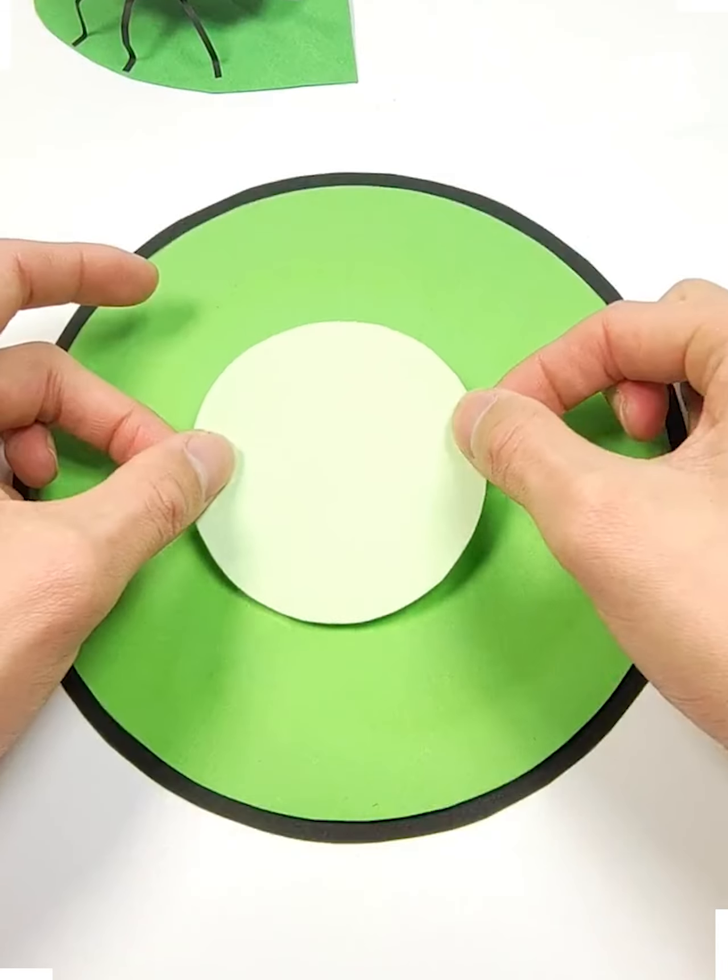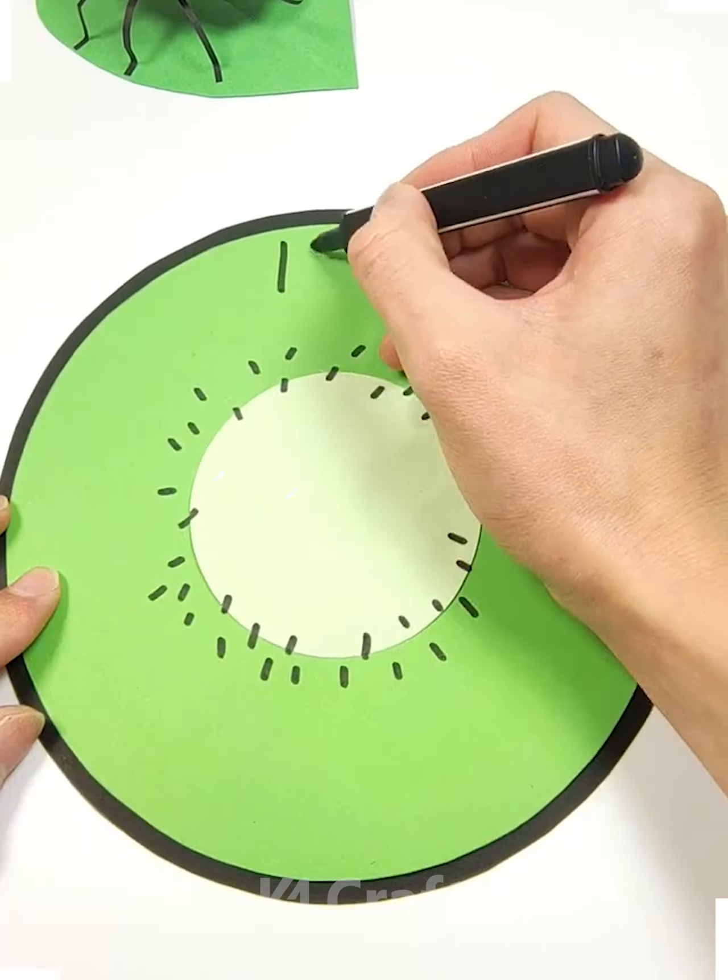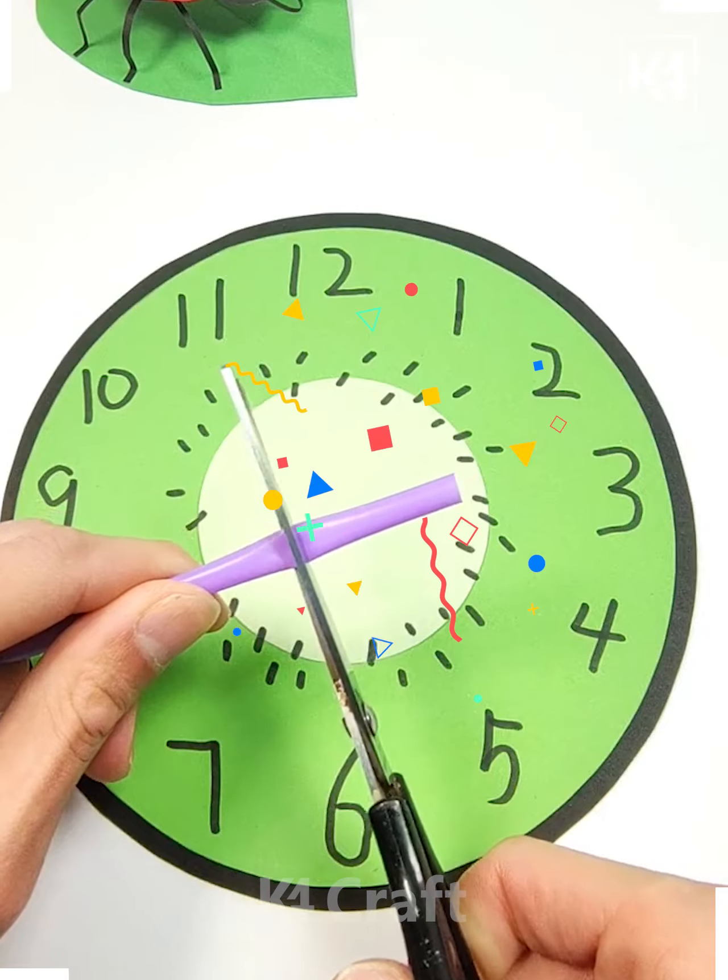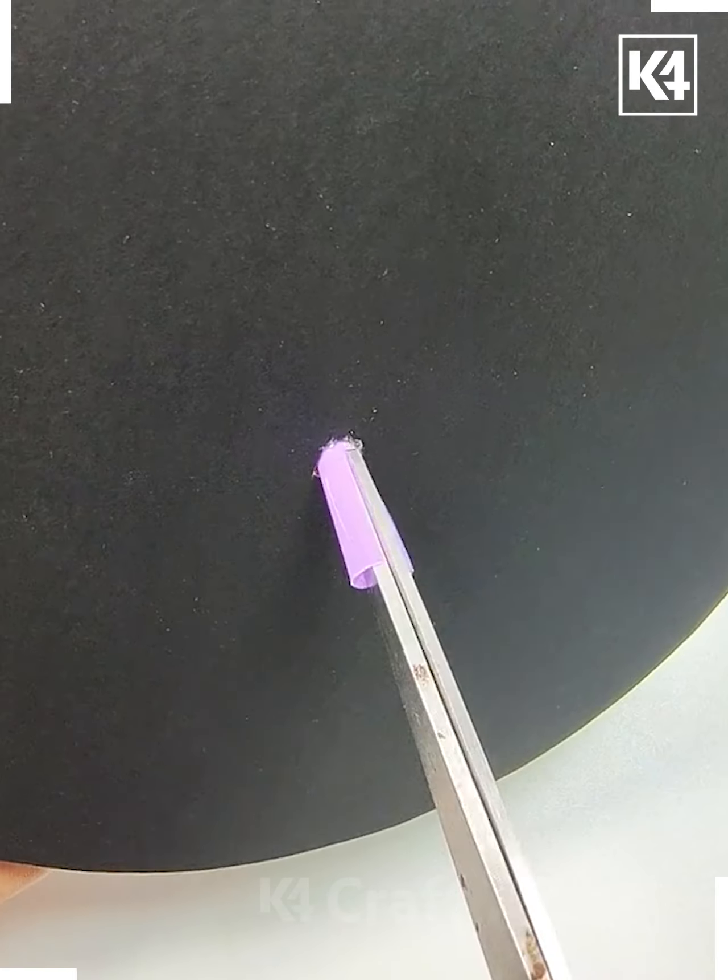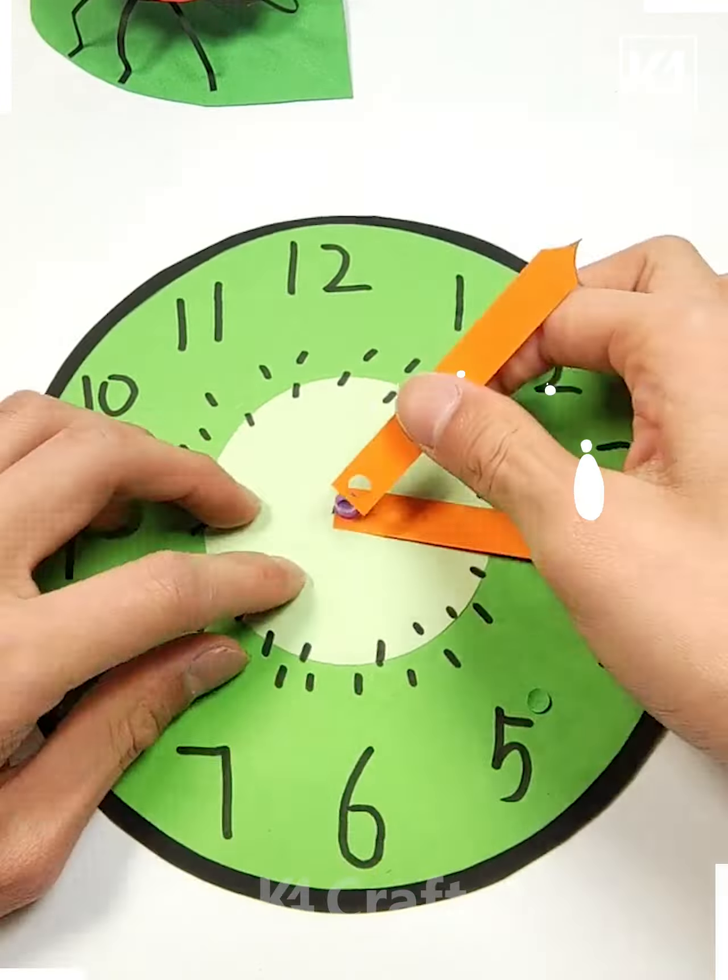Let's move ahead. Here we've made a clock as you can see by writing numbers on it and pasting needles using paper, and it's ready.